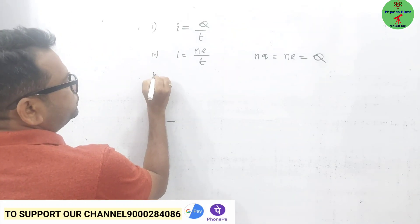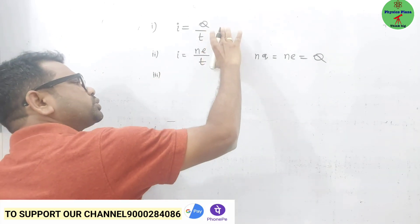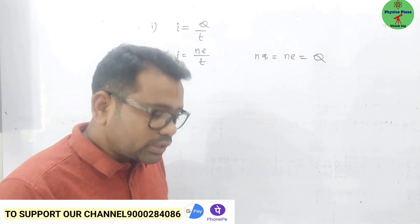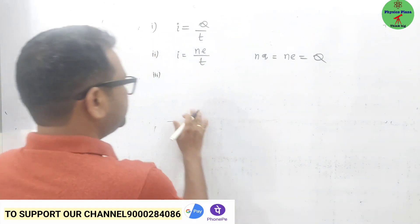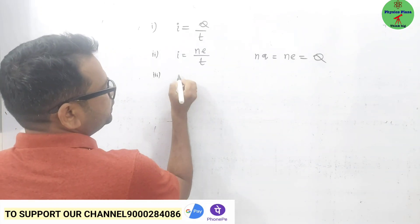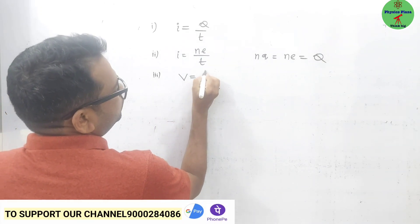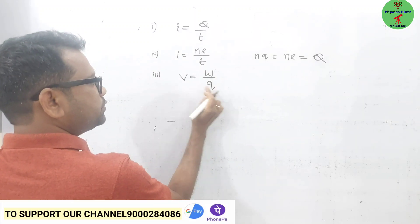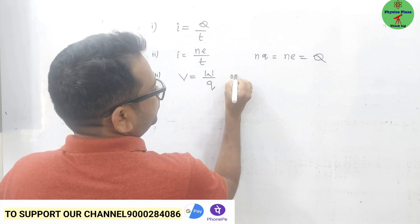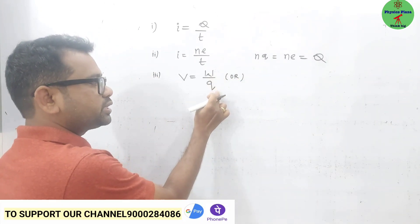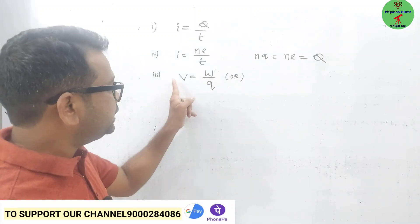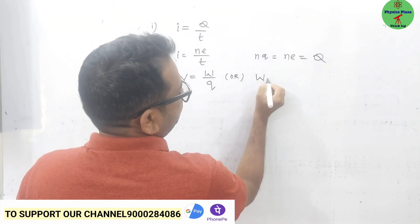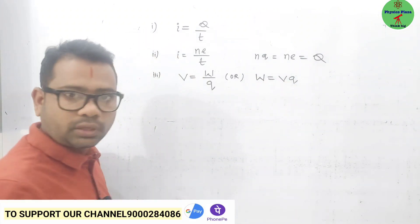Third formula: in unit B we have the concept of potential difference. From the definition of potential difference, V is equal to W by Q. Here W is work done, Q is charge, and V is potential difference. We use this when work done and charge are given. Sometimes potential difference and charge are given and we need to calculate the work done — in that case W is equal to V into Q.